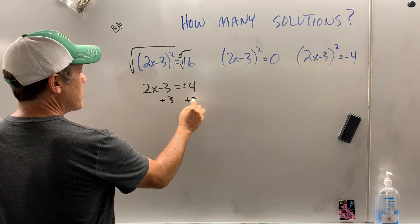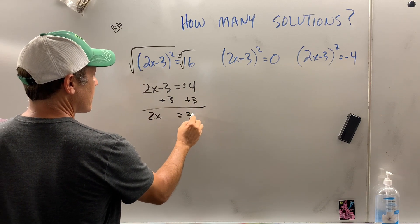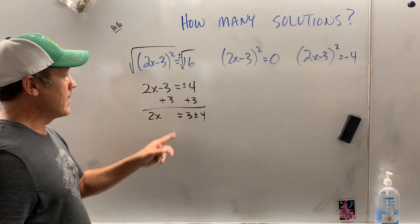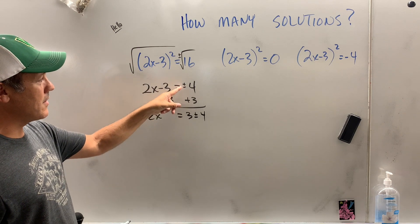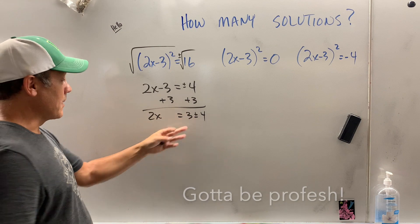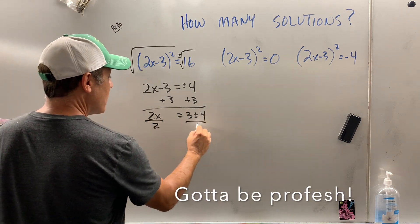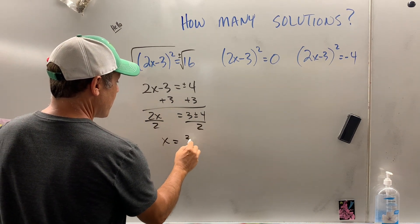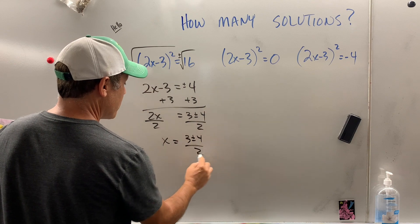We add 3 to both sides. 2x equals 3 plus or minus 4. Now, why did I write it like that rather than plus or minus 4 plus 3? Because I'm professional. That's how we do it. Now we divide by 2, and we get 3 plus or minus 4 over 2.